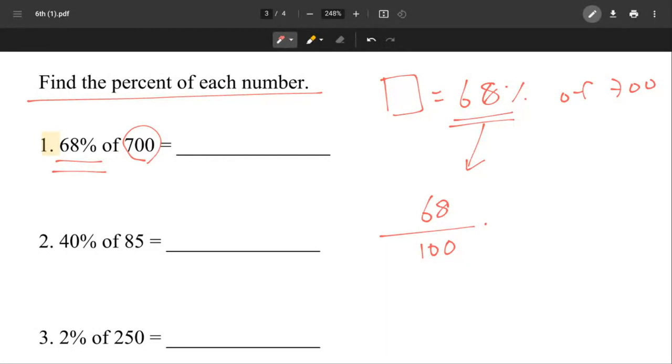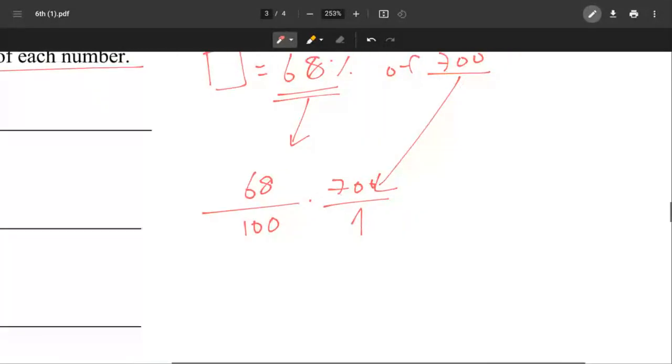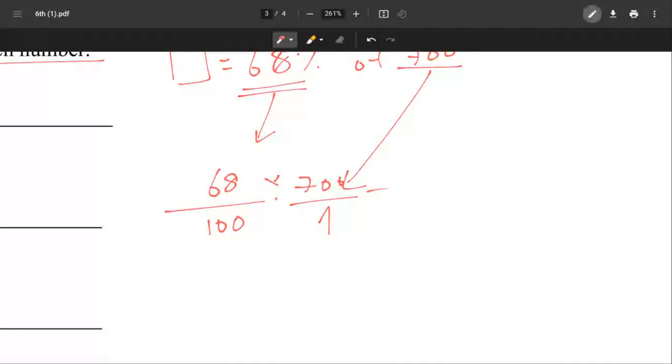We're going to multiply that by 700 over 1. When we multiply the top together, we get 47,600 over 100. We would cancel the zeros out.